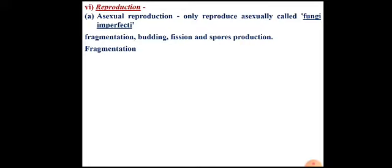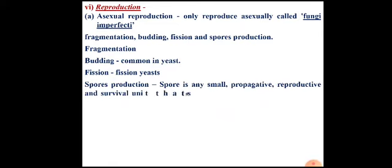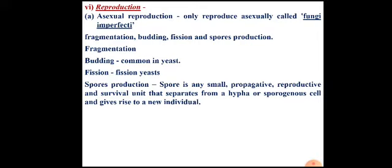Fragmentation involves a long filament that breaks at certain points, forming small pieces, each of which germinates to form a complete fungal body. Budding is commonly seen in yeast. Fission is seen in fission yeast. The most common method is production of asexual spores. A spore is a very small, propagative, reproductive, and survival unit that separates from a hypha or sporogenous cell, giving rise to new individual fungi.